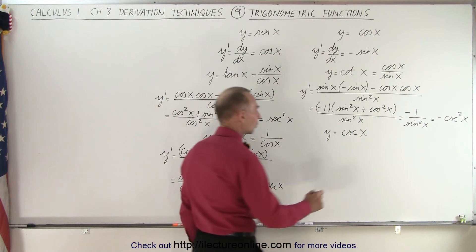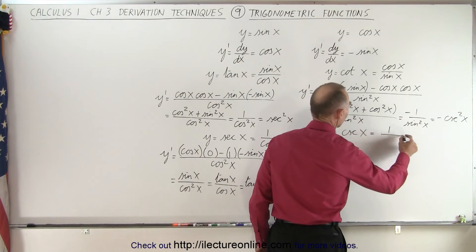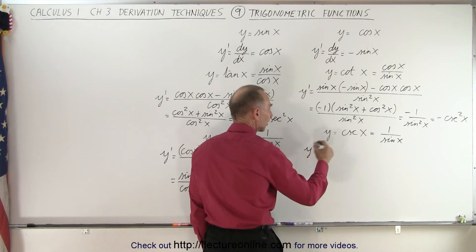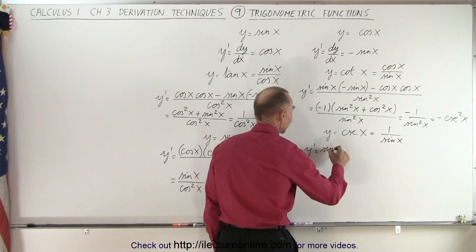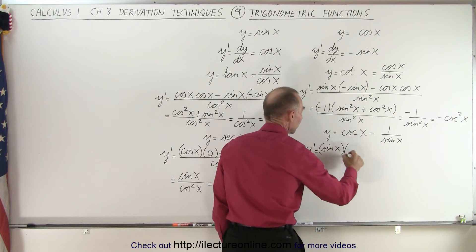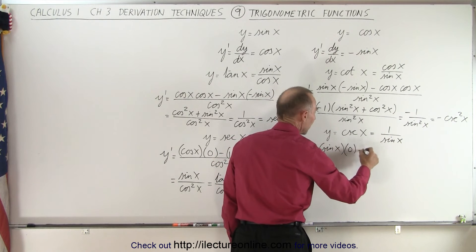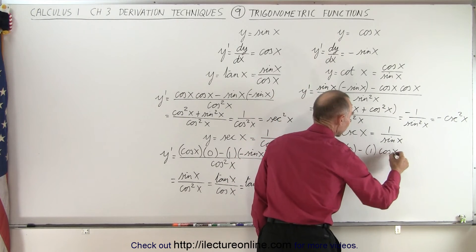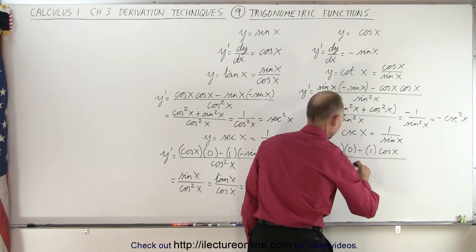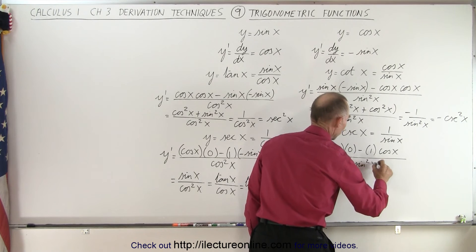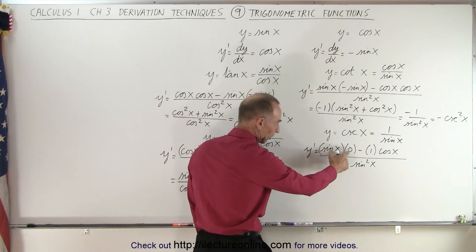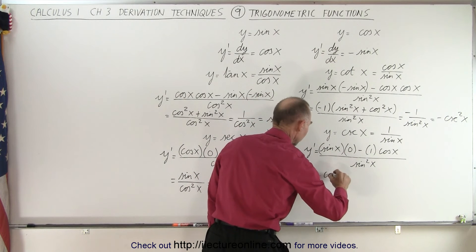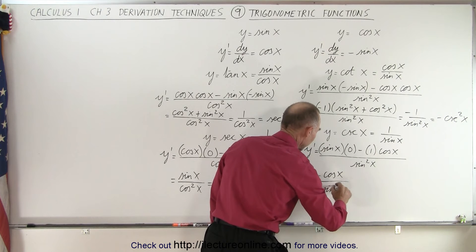We're going to do the same for the cosecant of x, which equals one over the sine of x. When we take the derivative, y prime equals the denominator — the sine of x — times the derivative of the numerator, which is a constant so that becomes zero, minus the numerator times the derivative of the denominator, which is the cosine of x, all divided by the sine squared of x. This gives us negative cosine of x over the sine squared of x.